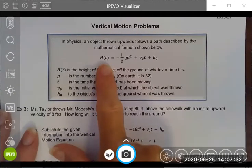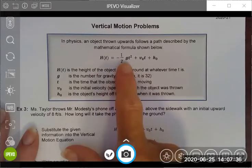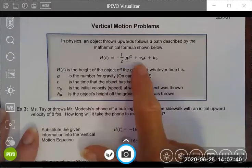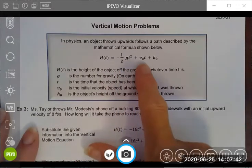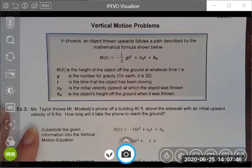Plus its initial velocity times the time it's been in the air, plus its initial height. So those are some components.